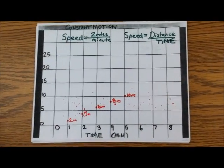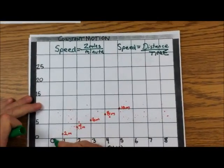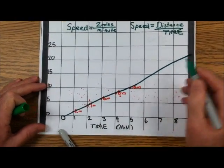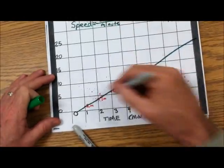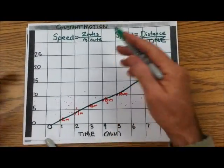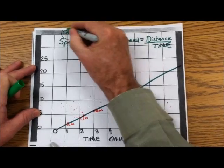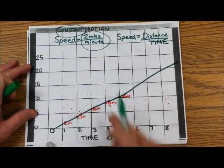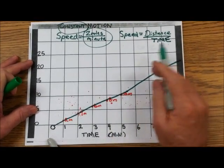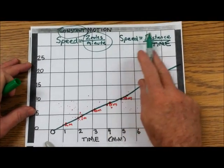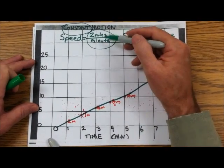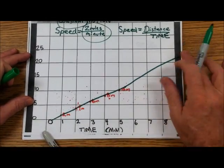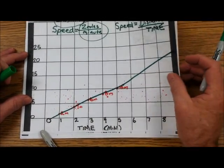You can see a pattern here. If we put a line through all these points and extend it up, it's a straight line. That means we're moving at a constant motion of two miles a minute. Using speed as distance over time, two miles per minute — constant motion.